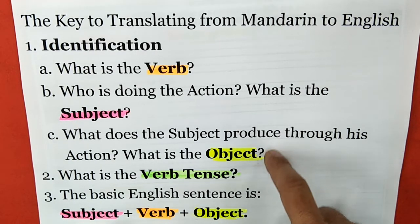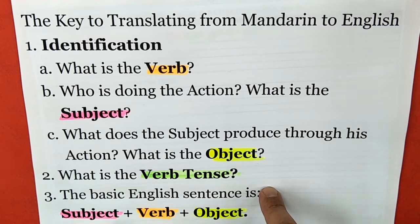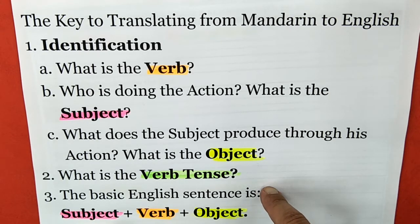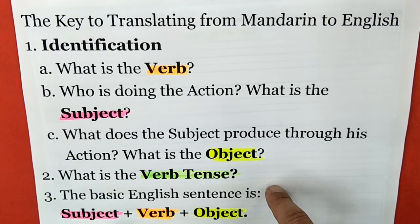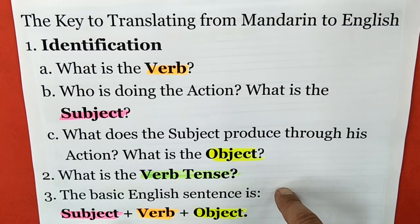Number two: we need to know the verb tense. In English, there are twelve verb tenses. If you do not use the correct verb tense, your listener, your reader, will not understand the sentence.